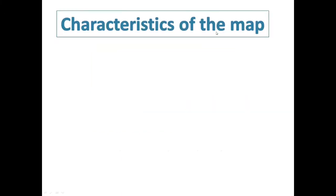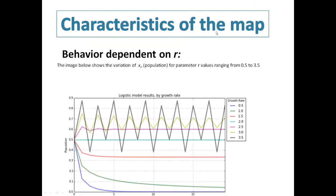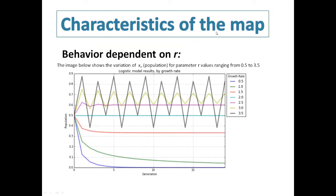So now let's discuss the characteristics of the map. Let's see the variation of xn with time for parameter r values ranging from 0.5 to 3.5. And this is the combined graph, which I'm going to explain one by one.